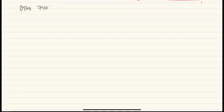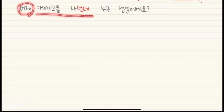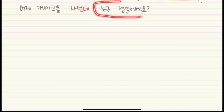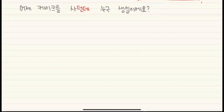어제 케이크를 사던데 누구 생일이에요? — Yesterday I saw you buying a cake. Whose birthday is it? You want to ask whose birthday it is, but you need to explain why you're asking. Because it's past, you use 던데.